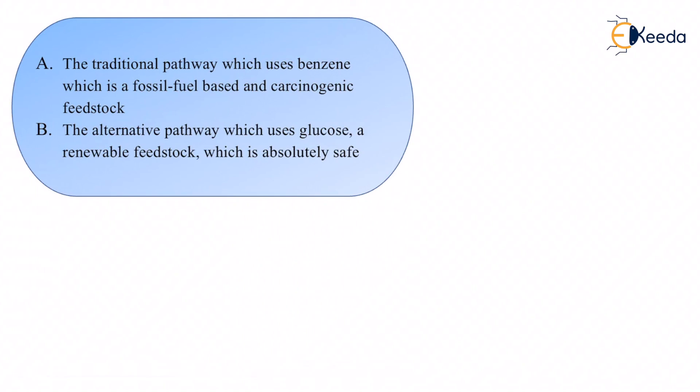So with this, we understand the conventional and green synthesis of adipic acid. We see the difference between them and understand that the difference is because of the raw material used. Just a little change in the raw material and process can bring out a huge difference, a huge positive impact on the environment as well as human civilization. Thank you.